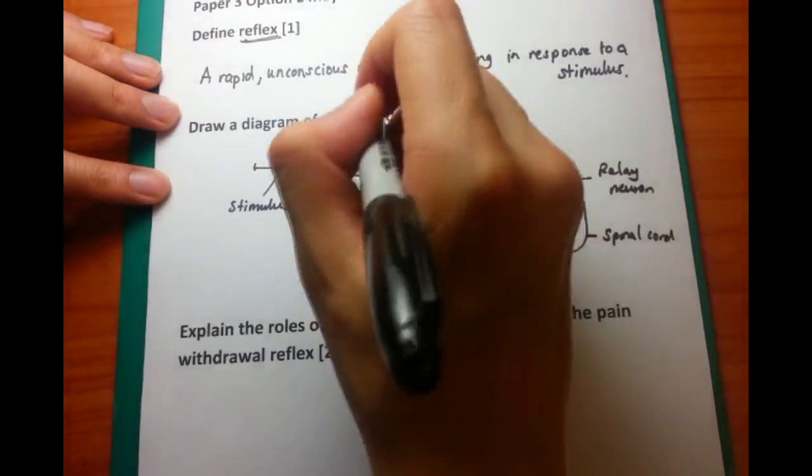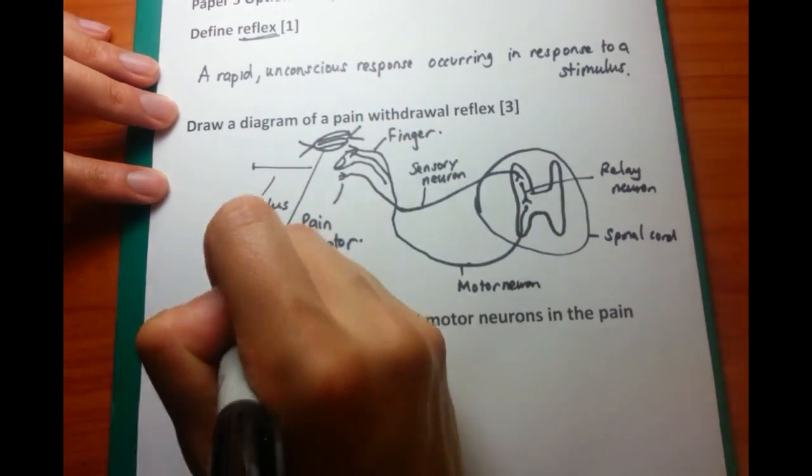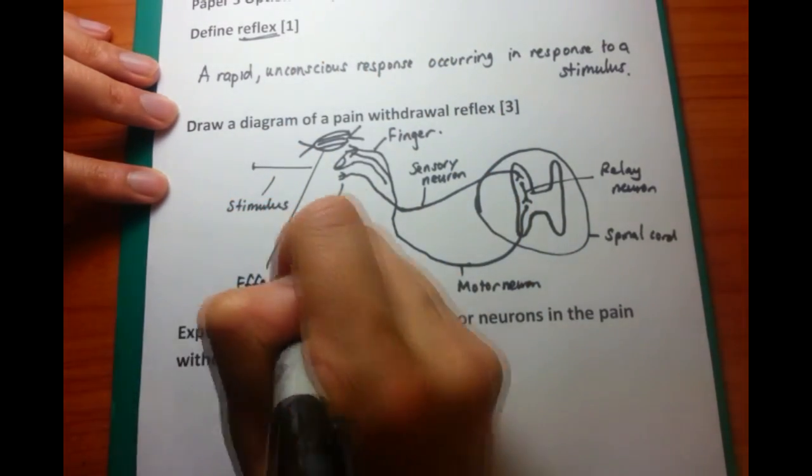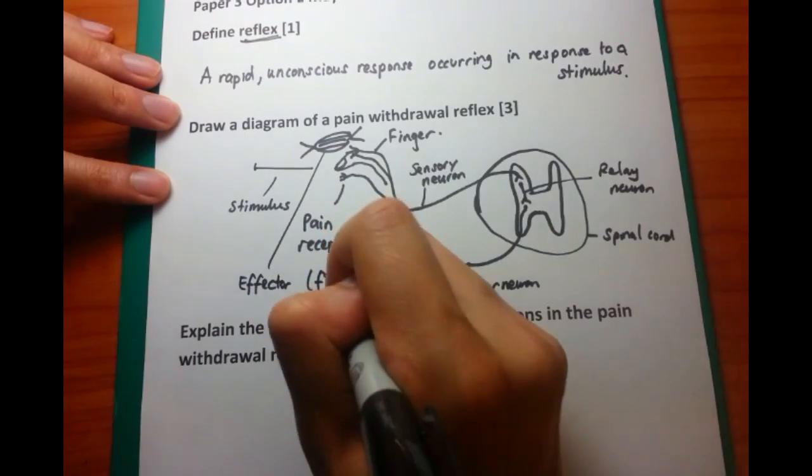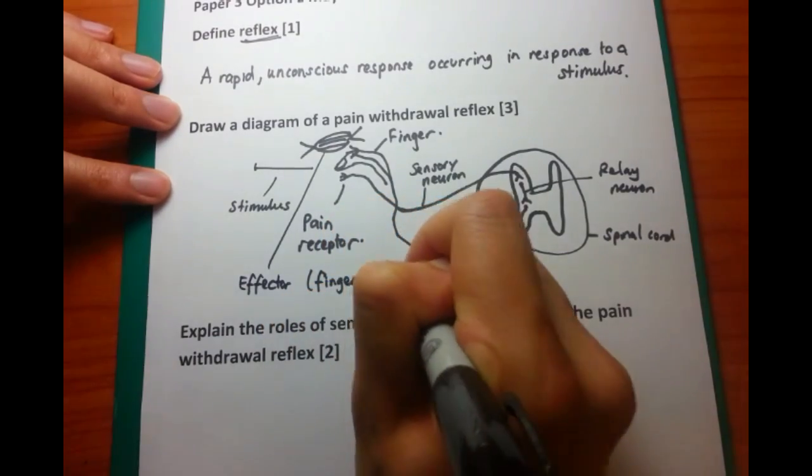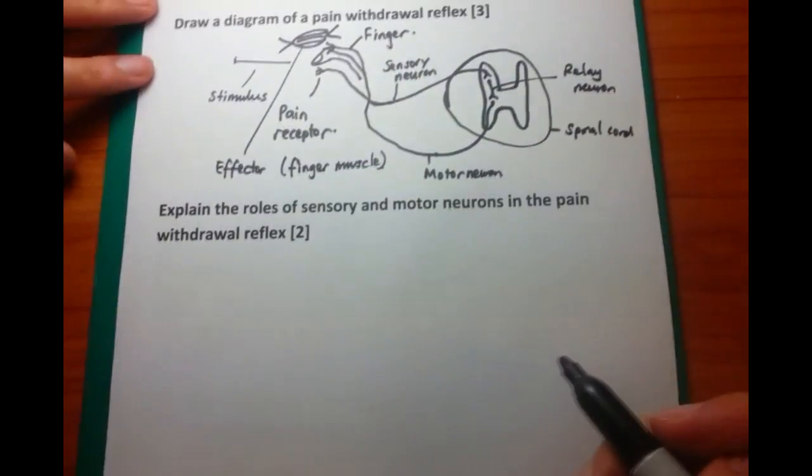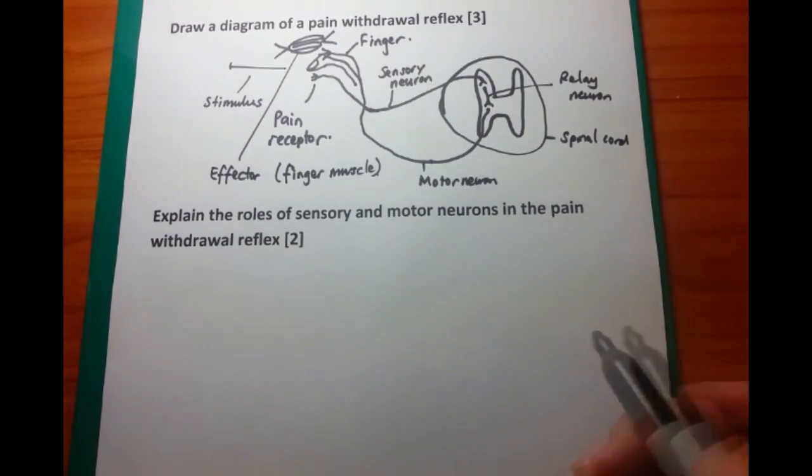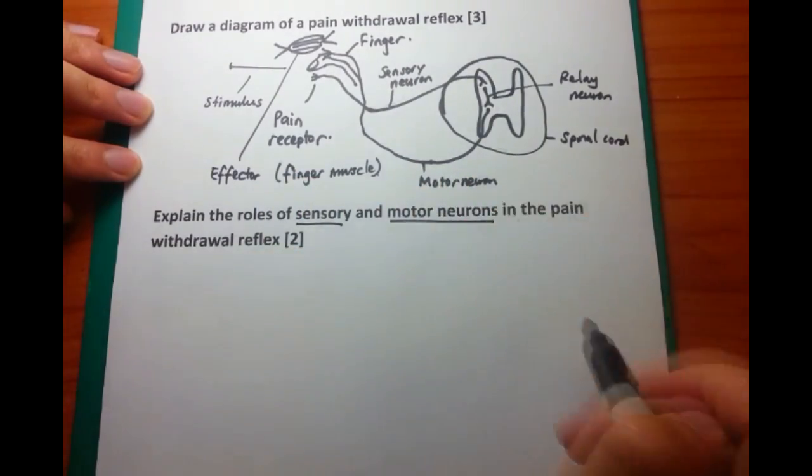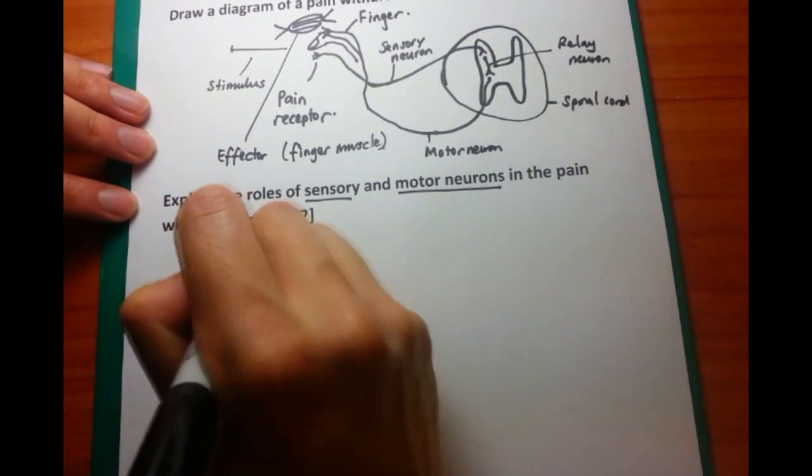Which is what I'm labeling here right now. And the motor neuron, that is an output neuron. And that connects finally to the effector, or in this case, the muscles of the finger. And this causes your finger to jerk back as soon as you touch or experience any pain.